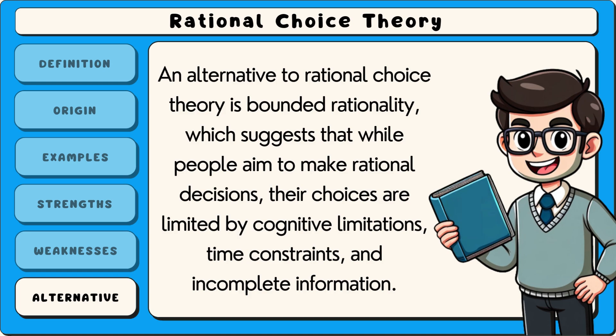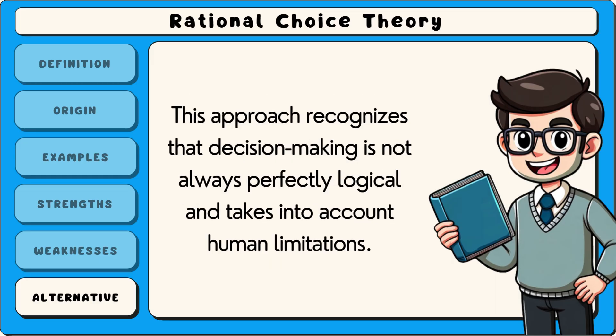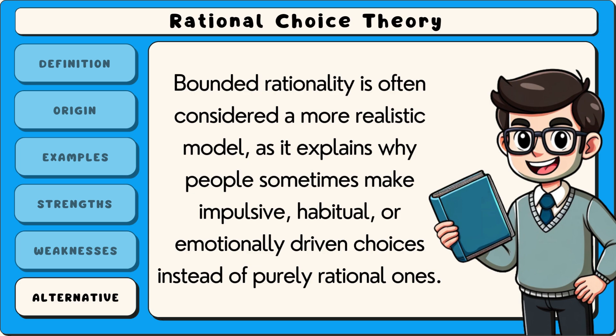An alternative to rational choice theory is bounded rationality, which suggests that while people aim to make rational decisions, their choices are limited by cognitive limitations, time constraints and incomplete information. Instead of always selecting the best possible outcome, individuals often settle for a choice that is good enough, known as satisficing. Bounded rationality is often considered a more realistic model as it explains why people sometimes make impulsive, habitual or emotionally driven choices instead of purely rational ones.